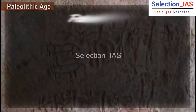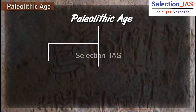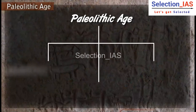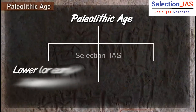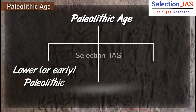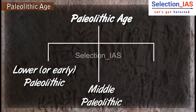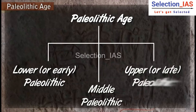The Paleolithic Age has been further divided into three periods: Lower or Early Paleolithic, Middle Paleolithic, and Upper or Late Paleolithic.